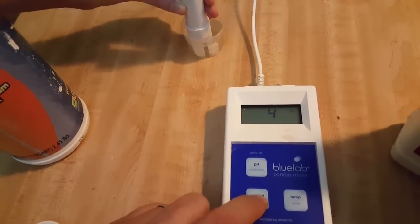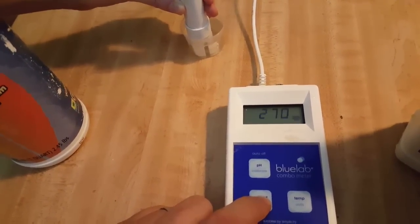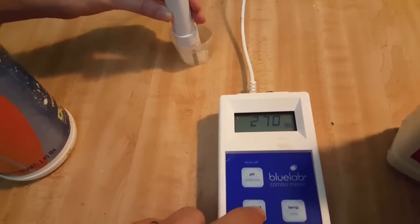Now before it was telling me 190 and 270, so it's kind of changed for some reason. Anyway, this is a 500 and a 700, right?